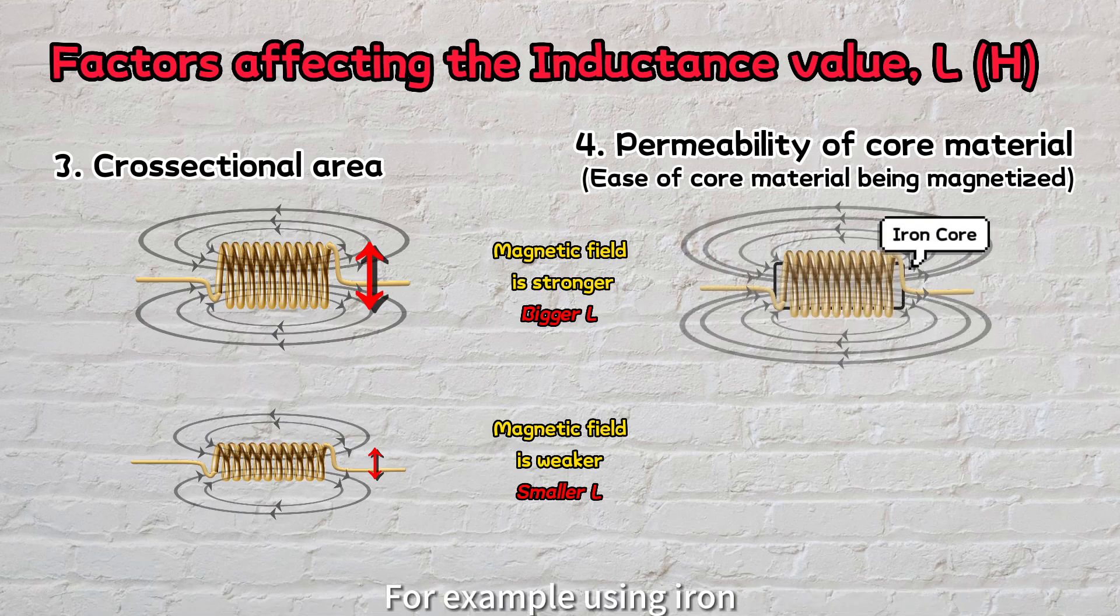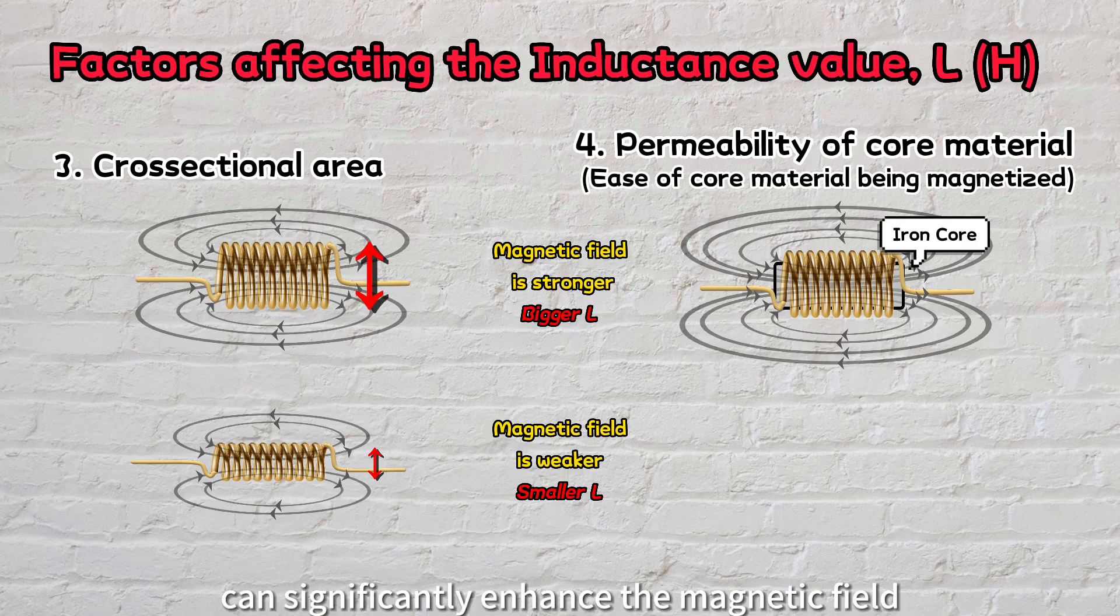For example, using iron or ferrite with higher permeability as a core material can significantly enhance the magnetic field and inductance.